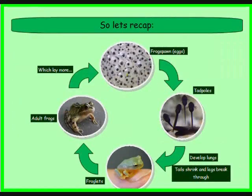So let's recap. The mother lays eggs, which are frog spawn. They turn into tadpoles. Then they develop lungs, and their tails shrink. They turn into little baby frogs, which turn into big frogs, which are adults. And then it starts all over.